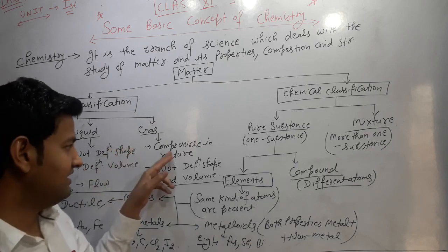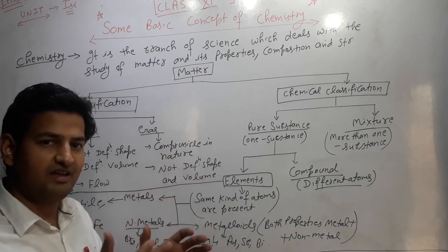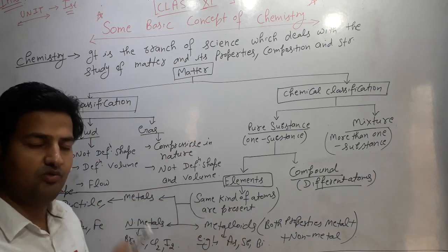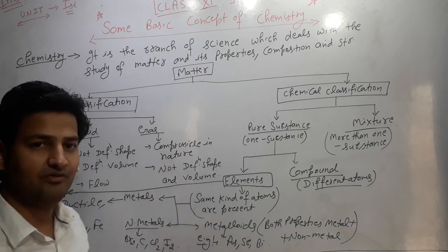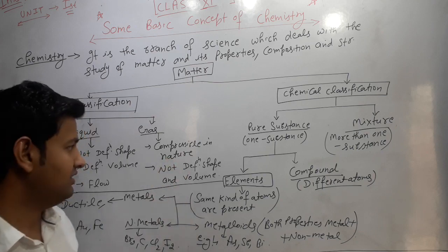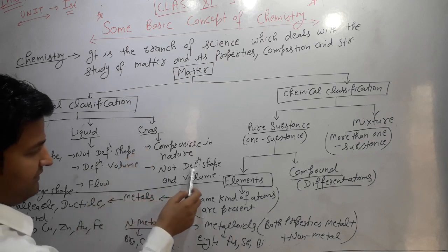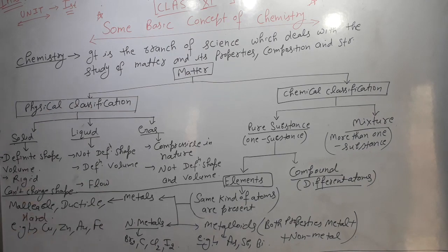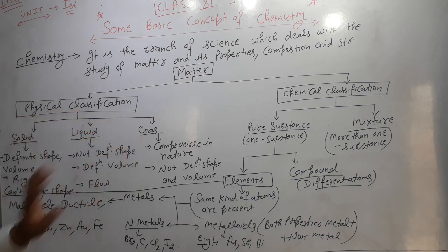The third state is gas. The main characteristic of gas is that it is compressible in nature — when pressure is applied, gas can be compressed from a large volume to a small volume. An example is LPG (liquefied petroleum gas) used in our kitchen. Gas does not have definite shape or definite volume. That completes the first type — physical classification of matter into solid, liquid and gases.